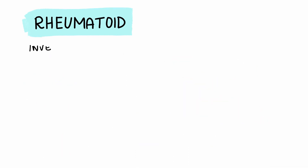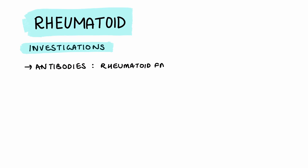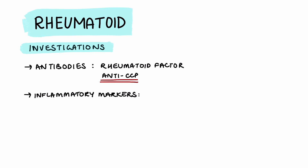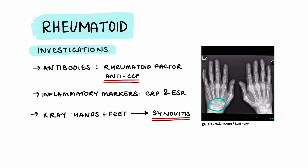Since rheumatoid arthritis is an autoimmune condition, it's important to investigate for antibodies. Specifically, rheumatoid factor and anti-CCP antibodies are checked. Inflammatory markers such as CRP and ESR will also be raised. Imaging techniques like x-rays of the hands and feet and ultrasound of the joint space can also be used, as the inflammation — also known as synovitis — can cause increased fluid.